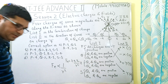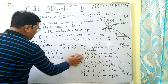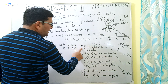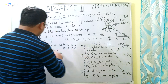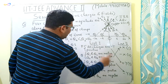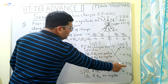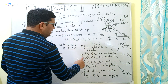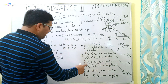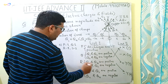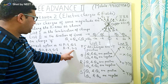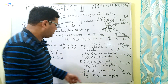So our answer is: P is linked to 2, Q is linked to 1, R is linked to 4, and S is automatically linked to 3. This gives us the correct option for the matching.